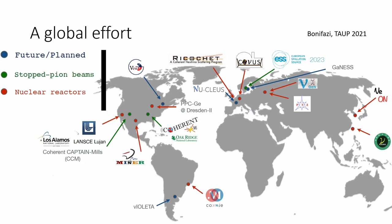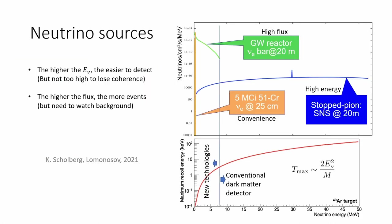Due to its importance, CEvNS detection has become a global effort. We can categorize experiments based on the origin of neutrinos. There are mainly three artificial neutrino sources: accelerators, reactors, and radioactive sources. As the neutrino energy goes up, the maximum nuclear recoil energy also goes up. That's why to detect neutrinos from a spallation neutron source, only conventional dark matter detectors are needed, while for the detection of reactor neutrinos, new technologies are required.